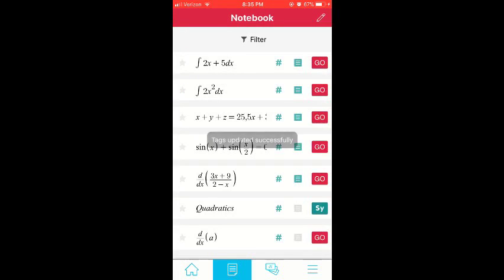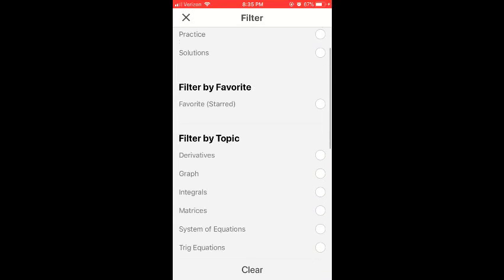You can now filter by the tags you just made by selecting filter and clicking the tags that you want to filter by.